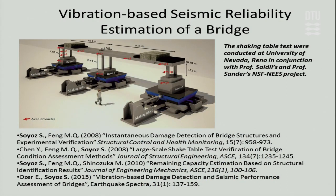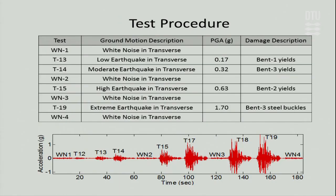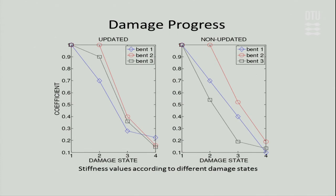I started integrating health monitoring into reliability estimation about ten years ago as a PhD student. There was a test at the University of Nevada Reno where a structure was damaged to different states. We collected strong motion responses as well as white noise. Using white noise and linear identification techniques, or using strong motion with techniques like the extended Kalman filter, we can estimate damage. The question is: what is the damage state you estimate using only finite element models with no sensors, versus when you have sensor data?